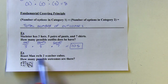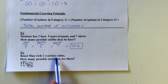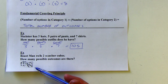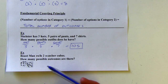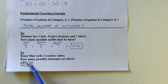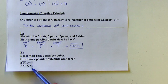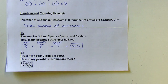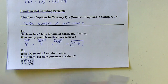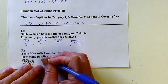Beastman rolls two number cubes. Our book calls them number cubes so we know we're talking about a six-sided die. How many possible outcomes are there? Let's use the Fundamental Counting Principle. For die number one, there are six things that can happen: one, two, three, four, five, or six. On the second number cube, also six things can come up. So there are 36 different possible outcomes.